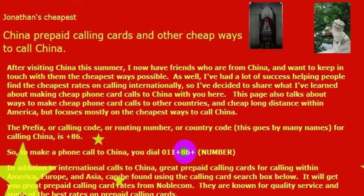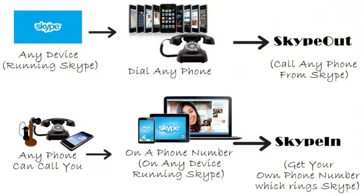Again, the country code for China is 86. But I wouldn't really recommend calling direct. Your phone company will charge you a lot of money. If you want to call a phone number, I really recommend using Skype.